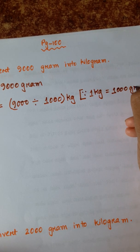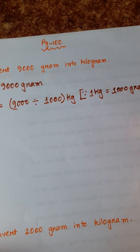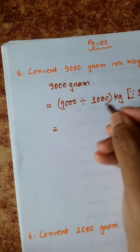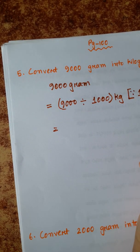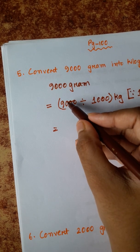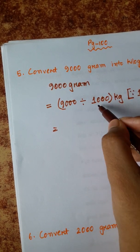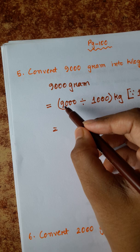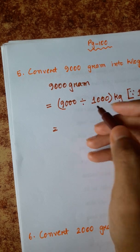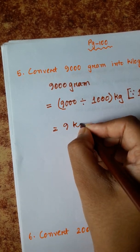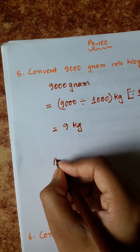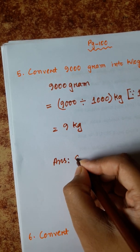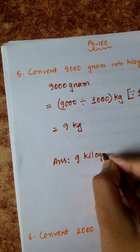Since 1 kilogram is equal to 1000 gram, so we divide 9000 by 1000. There are three zeros after 9 and three zeros after 1, so we can cancel them. 9 divided by 1 is 9 kilograms. So answer is 9 kg.